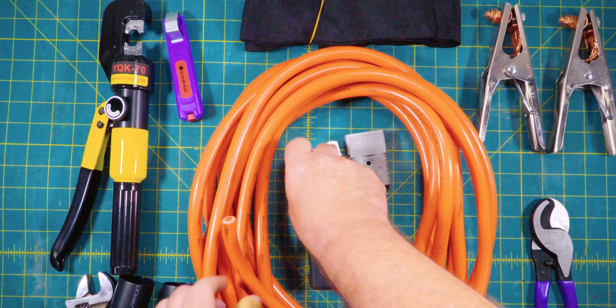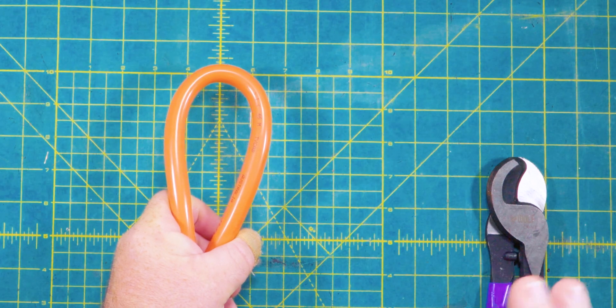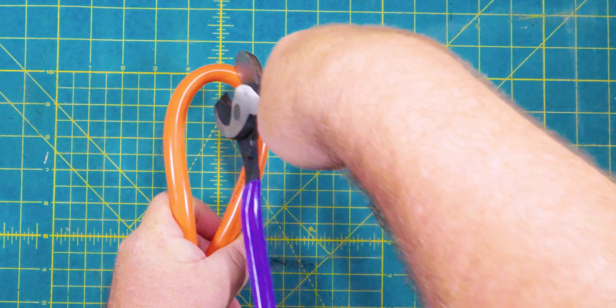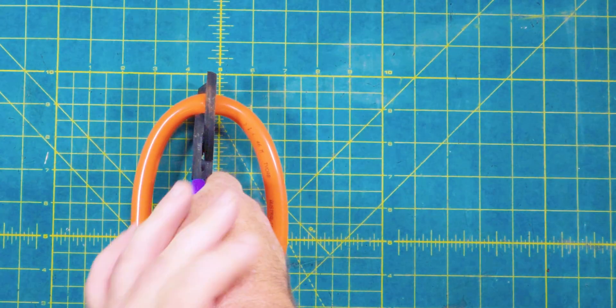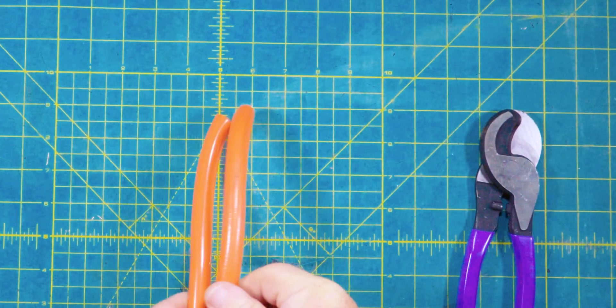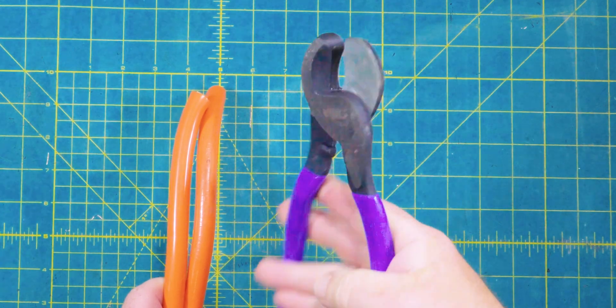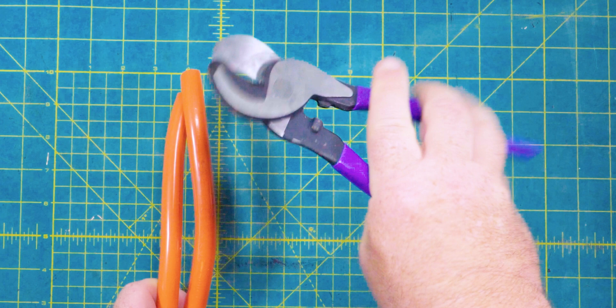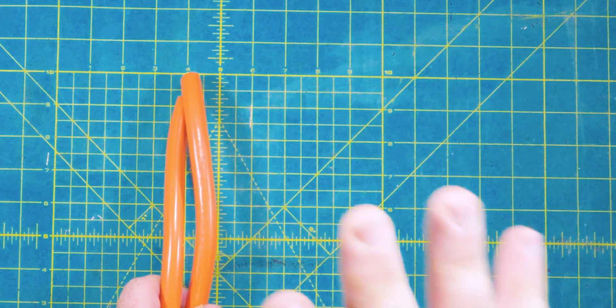First up, let's start stripping these wires so we can get the end lugs on. Before we strip it, we'll need to cut it in half because we need a positive and a negative line. We'll get our cable cutters, we've already marked out where our center line is, and now we've got two pieces of cable. You can see how easy it is - cable cutters do a really nice job. Let's start stripping the ends.